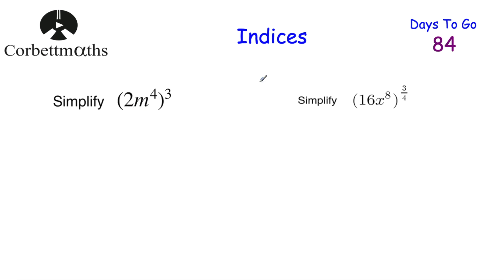Now let's look at a couple of algebra questions. Simplify (2m⁴)³. Cube everything in the bracket: 2³ = 8, and (m⁴)³ means multiply the powers — 4 × 3 = 12, giving m¹². So (2m⁴)³ = 8m¹².